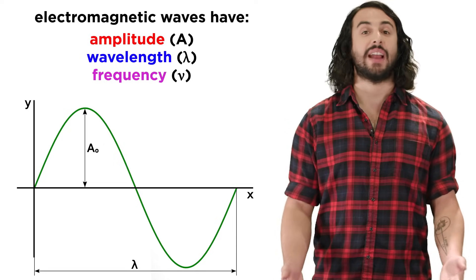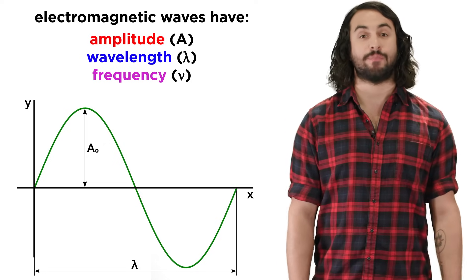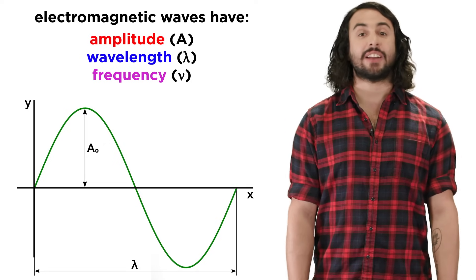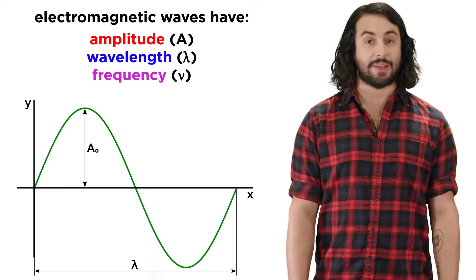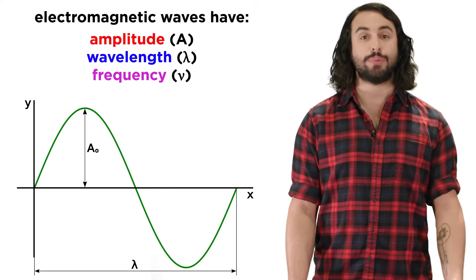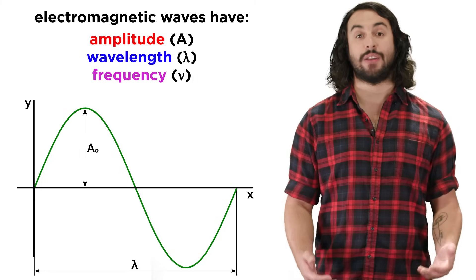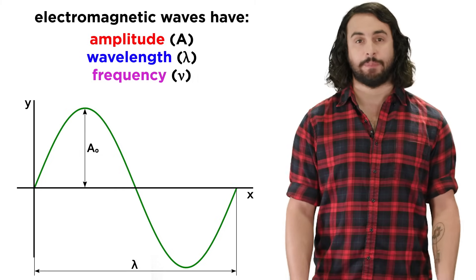Just like the kinds of waves we have previously discussed, electromagnetic waves have amplitudes, wavelengths, and frequencies.